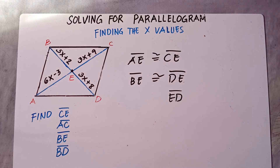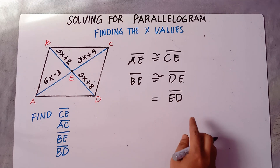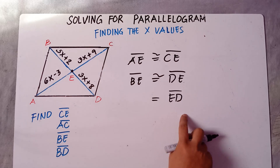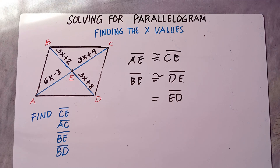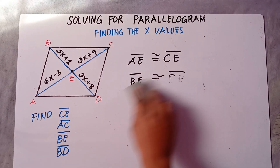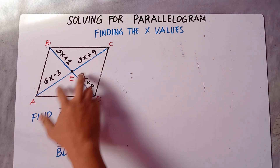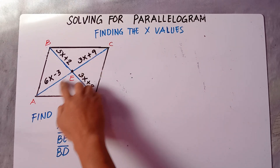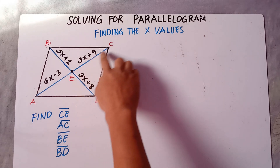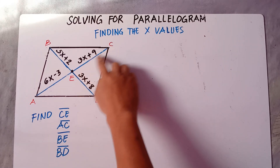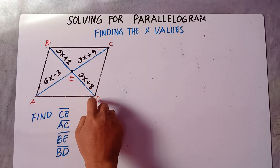So if these two sides are congruent, we can equate them to find the X values. We are told to find line CE, line AC, line BE, and line BD.